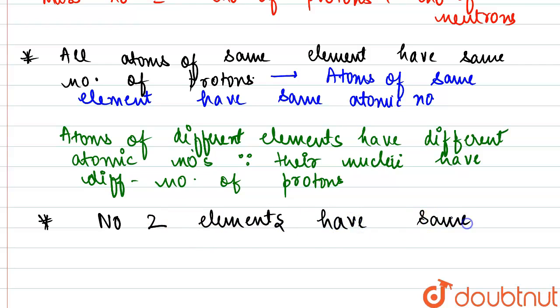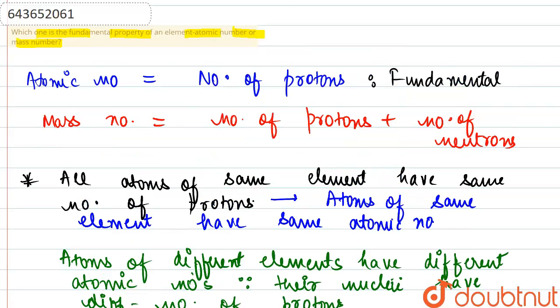However, this doesn't happen with mass number. There are different elements that can have the same mass, so mass number cannot be a fundamental property. So the answer is atomic number.